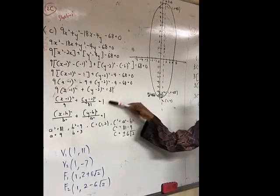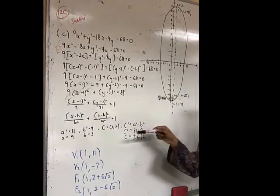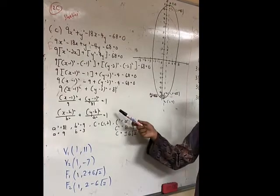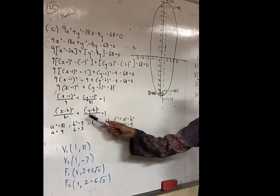Then we divide by 81 so this becomes (x-1)²/9 and this becomes (y-2)²/81. Since A needs to be more than B, this one becomes A and this one becomes B.